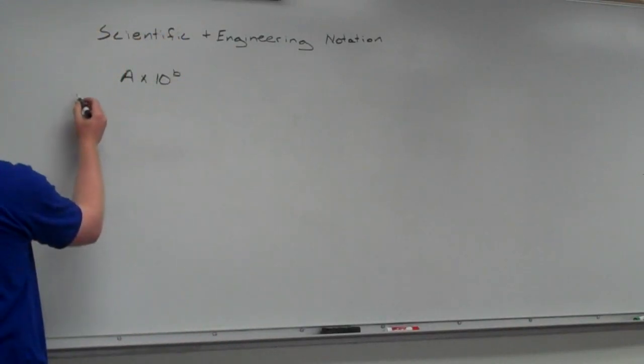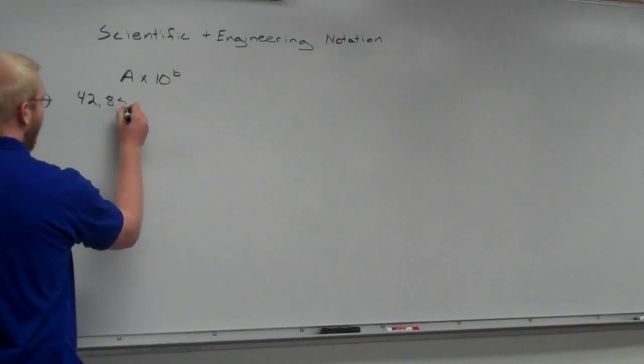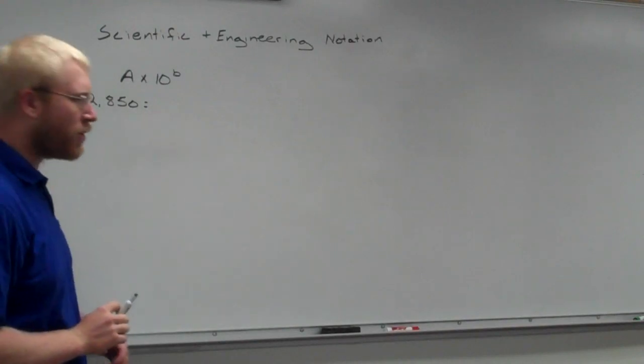So, if I had a larger number, let's say I had 42,850. What is that going to be in scientific notation?